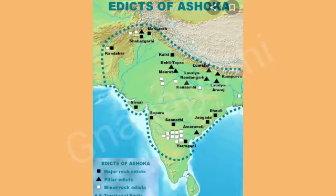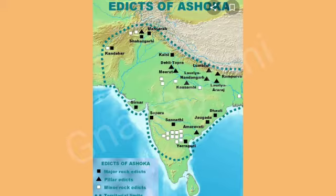The Mauryan Empire reached the height of its political power during Ashoka's rule. It stretched from the Hindu Kush in the west to the Brahmaputra in the east, and from the Himalayas in the north to Mysore in the south. It also included Kabul, Kandahar, Nepal, and Kashmir.